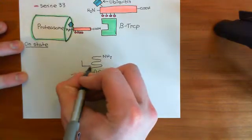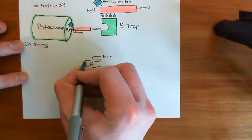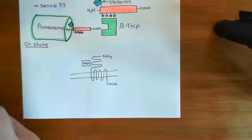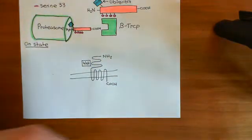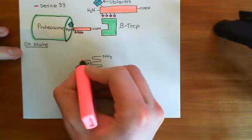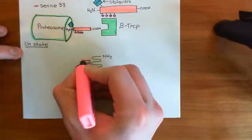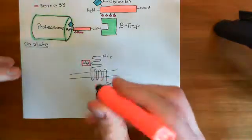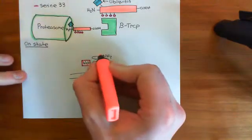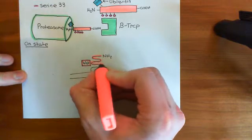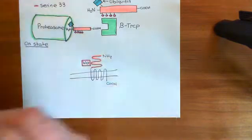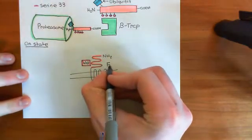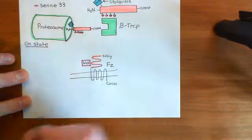We've got our Wnt molecule bound here to the amino terminal domain of the frizzled receptor. So let's colour these portions in — Wnt in purple, and the amino terminal domain of the frizzled receptor in red. So this is our frizzled receptor, which I'll abbreviate as FZ.